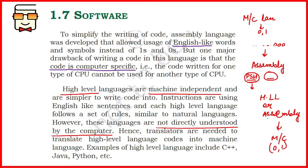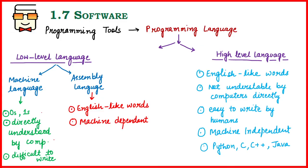That is why we have softwares like assemblers. Assemblers convert assembly language to machine language. And there are compilers and interpreters that convert high-level language to machine code.